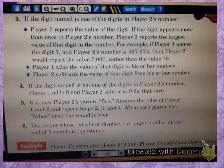So they're giving you the example if player one names the digit seven and player two's number is 987,675, then player two would report the value 7,000 rather than the value 70, because you're going to give them the larger one.